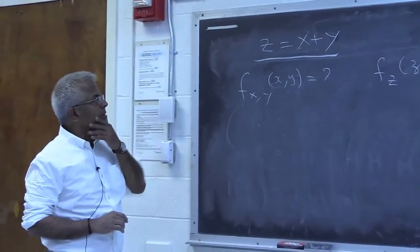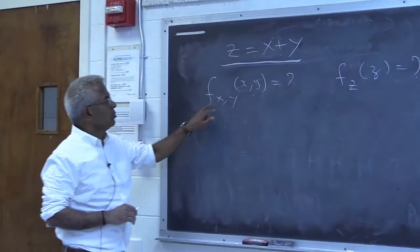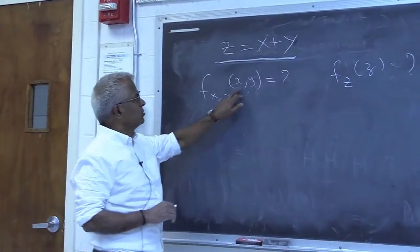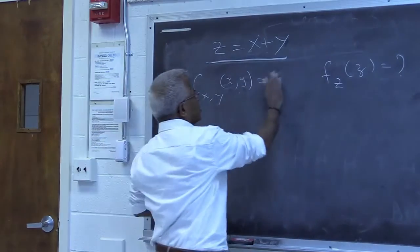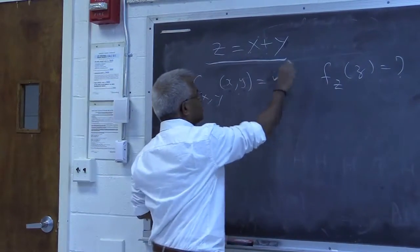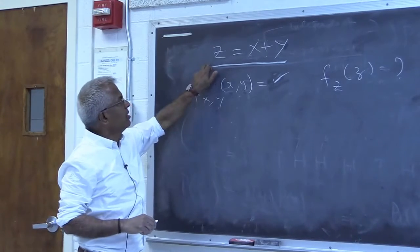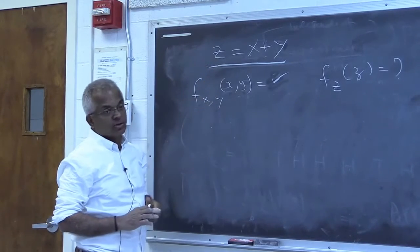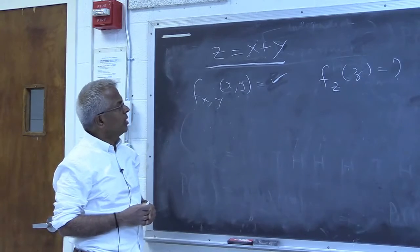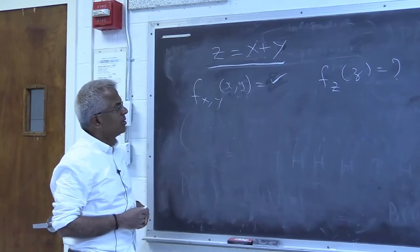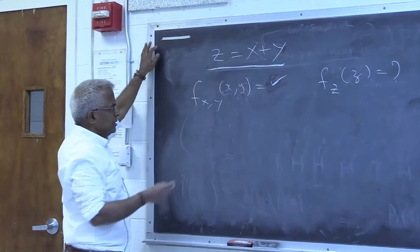Let's look at this classic problem. You have two random variables whose joint density function is given. The problem is to find the density function of the sum of two random variables, Z = X + Y. We want the density function of Z.